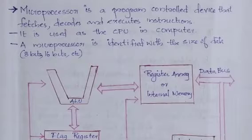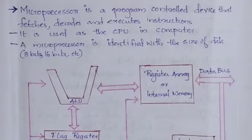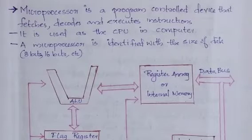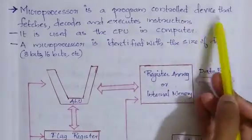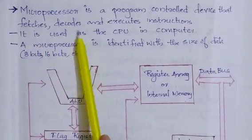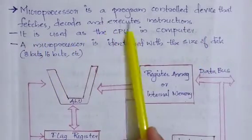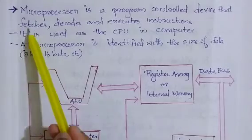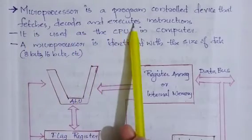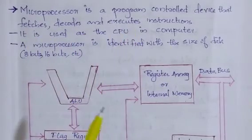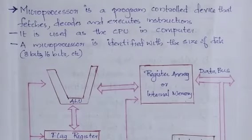In this video, I will tell you the basic things of microprocessors. First, what is a microprocessor? It is a program control device that fetches, decodes and executes instructions. It is used as a CPU in a computer.